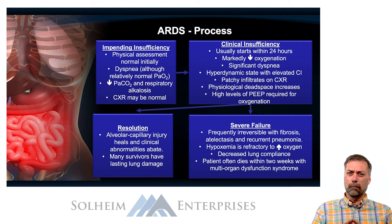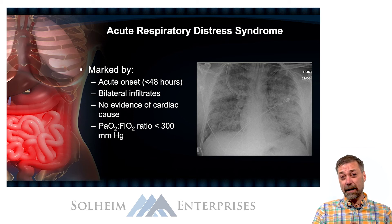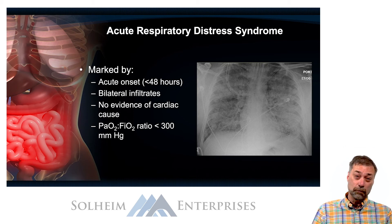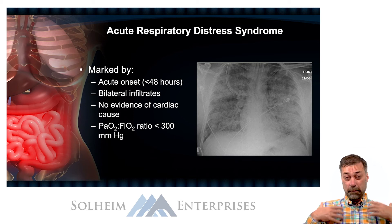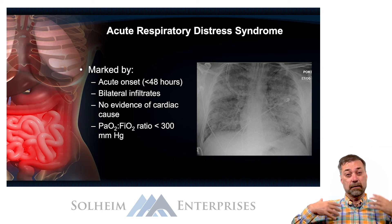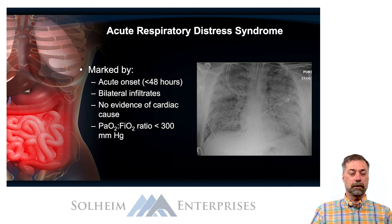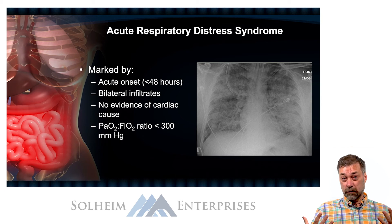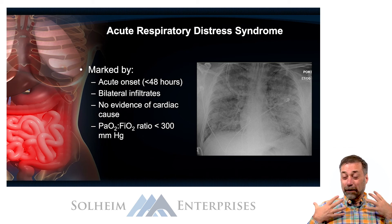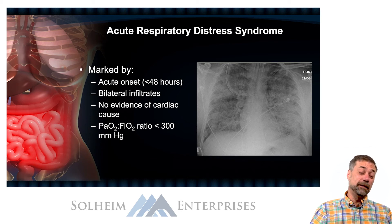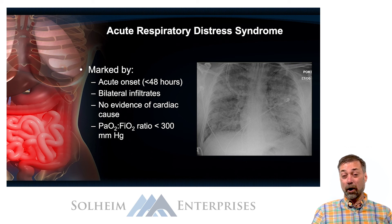The classic findings that give away ARDS include its acute onset — the patient goes into full-blown ARDS within 24 to 48 hours, representing a rapid deterioration. Bilateral infiltrates appear on x-ray as the lungs fill with fluid, giving a really fluffy-looking chest x-ray. However, these patients generally don't have heart failure, so the pulmonary edema is not cardiac in origin.